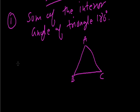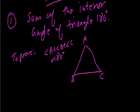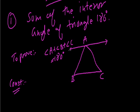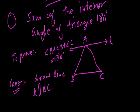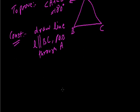So there is a triangle ABC. Now we have to prove this, and to do so we have to make one construction. The construction is that we have to draw a line which is parallel to BC and passes through A — parallel to BC and passing through A. This is our construction.